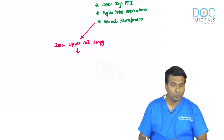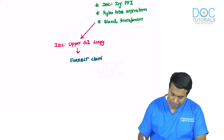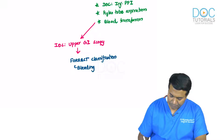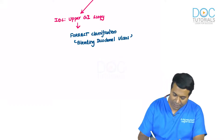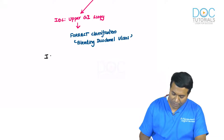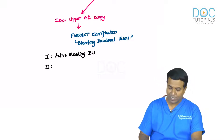The gastroenterologist performs upper GI endoscopy and applies the Forrest classification of bleeding duodenal ulcer. Type 1 is an active bleeding ulcer. Type 2 is subdivided: 2A — visible vessel (V), 2B — visible clot (C), 2C — black dot (D), meaning bleeding has completely stopped.